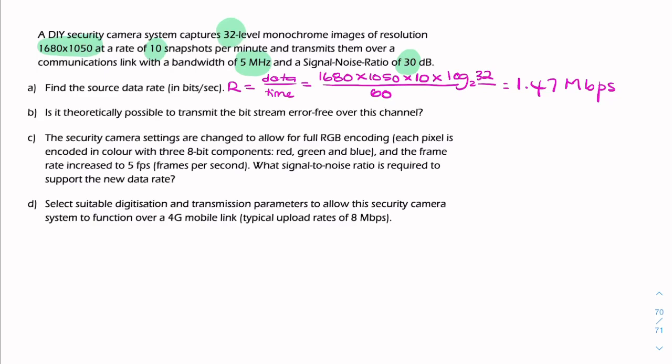Now we're asked is it possible to transmit this data error free. We're being asked indirectly is R less than or equal to the channel capacity. So let's find what the channel capacity is. The channel capacity C using the Hartley Shannon theorem is the product of the bandwidth times the log 2 of the signal to noise ratio.